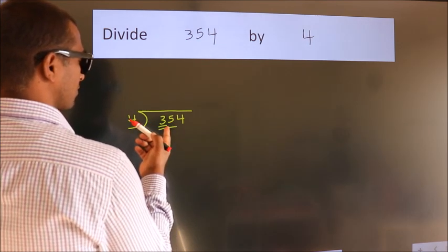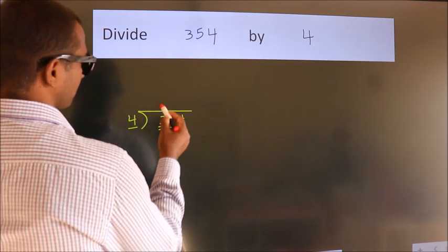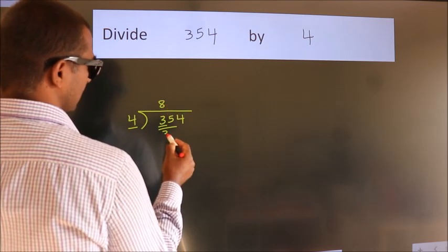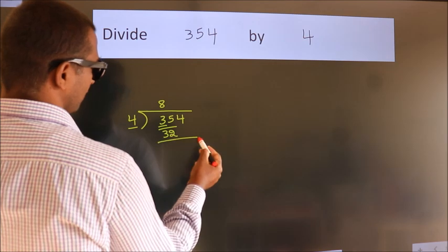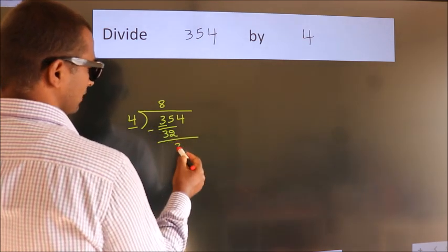A number close to 35 in 4 table is 4 times 8 equals 32. Now we should subtract. We get 3.